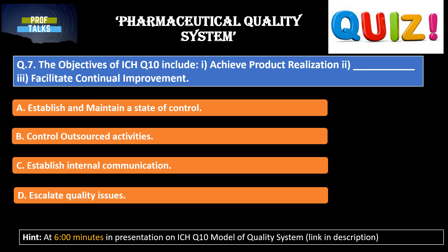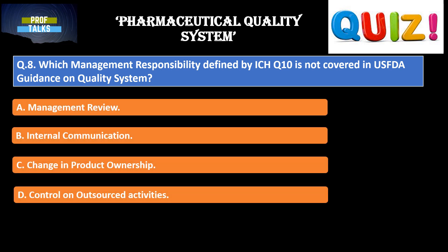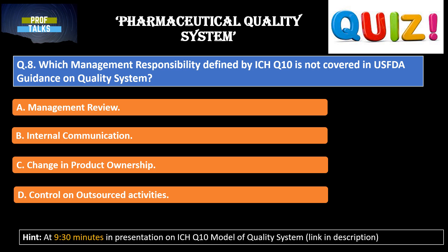The next question: which management responsibility defined by ICH Q10 is not covered in USFDA guidance on quality system? The four options include: management review; internal communication; change in product ownership; and control of outsourced activities. You can find the answer at 9.30 minutes in the ICH Q10 presentation.